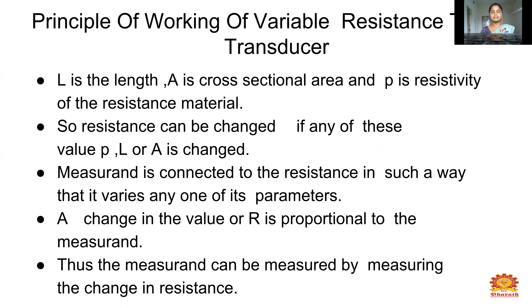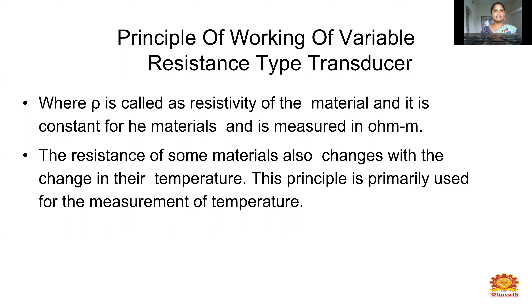If any one of the parameters — rho, L, or A — is changed, the resistance value changes. The measurand is connected to the resistance in such a way that it varies any one of its parameters, and the change in the value of R is proportional to the measurement. Where rho is called the resistivity of the material; it is constant for a given material and is measured in ohm-meter. The resistance of some materials also changes with the change in their temperature, and this principle is primarily used for the measurement of temperature.